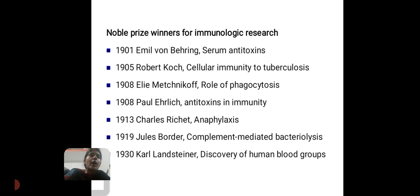Next, Nobel Prize winners for immunological research. In 1901, Emil von Behring — serum antitoxins. In 1905, Robert Koch — cellular immunity in tuberculosis. In 1908, Metchnikoff — role of phagocytosis. In 1908, Ehrlich — antitoxin and immunity. In 1913, Charles Richet — anaphylaxis. In 1919, Jules Bordet — complement-mediated bacteriolysis. In 1930, Karl Landsteiner — discovery of human blood groups.